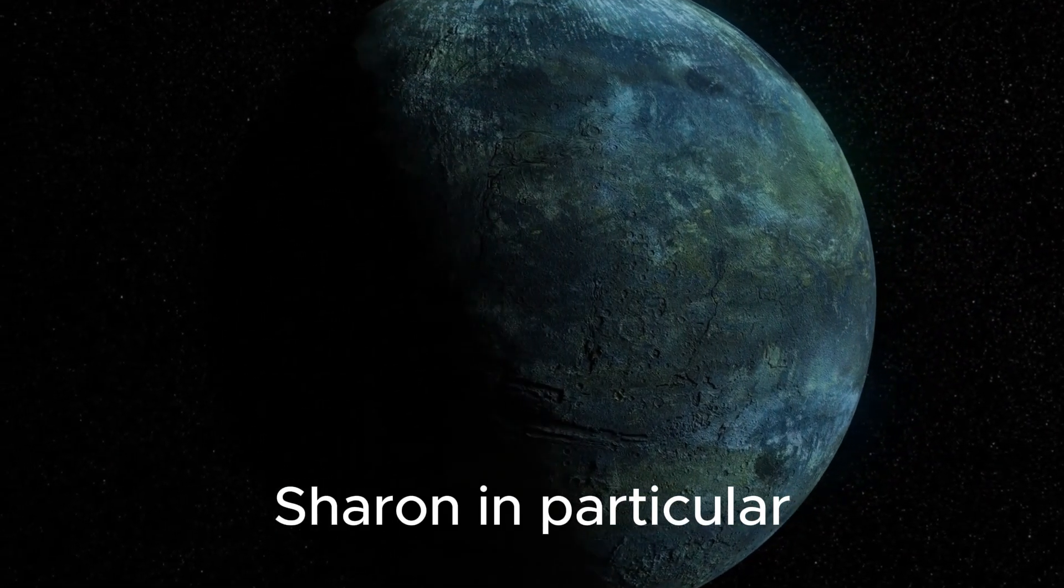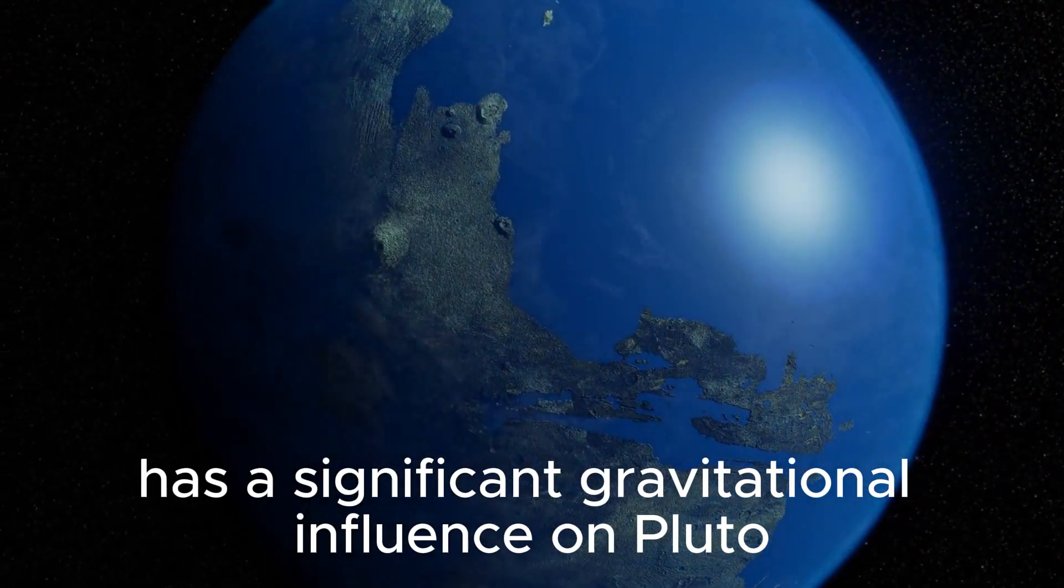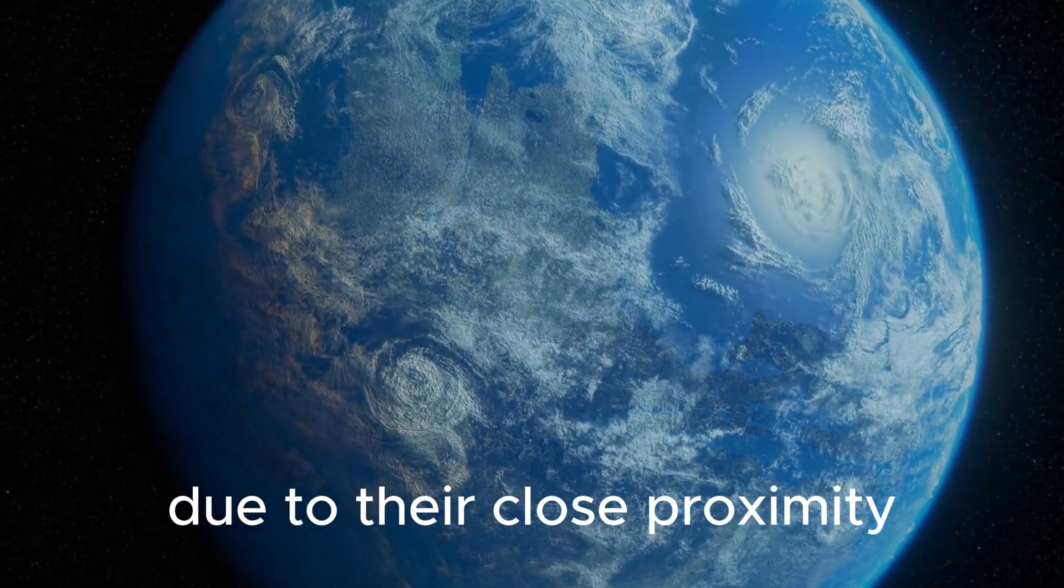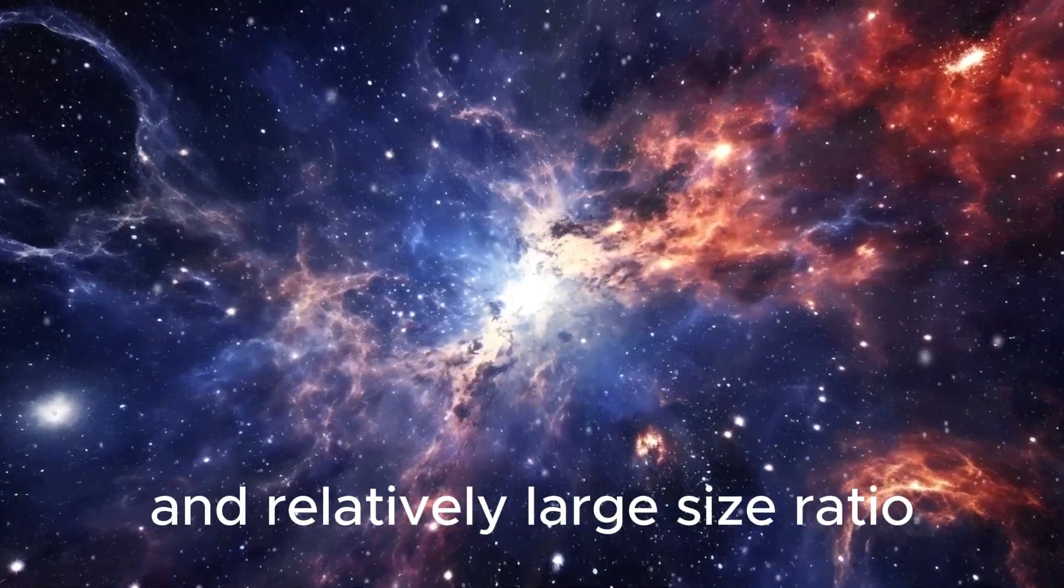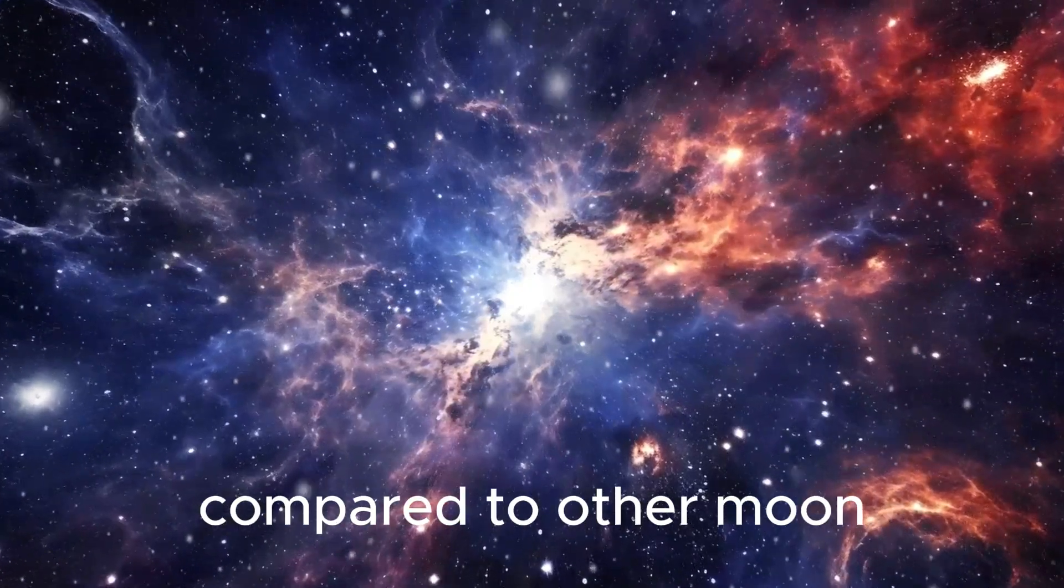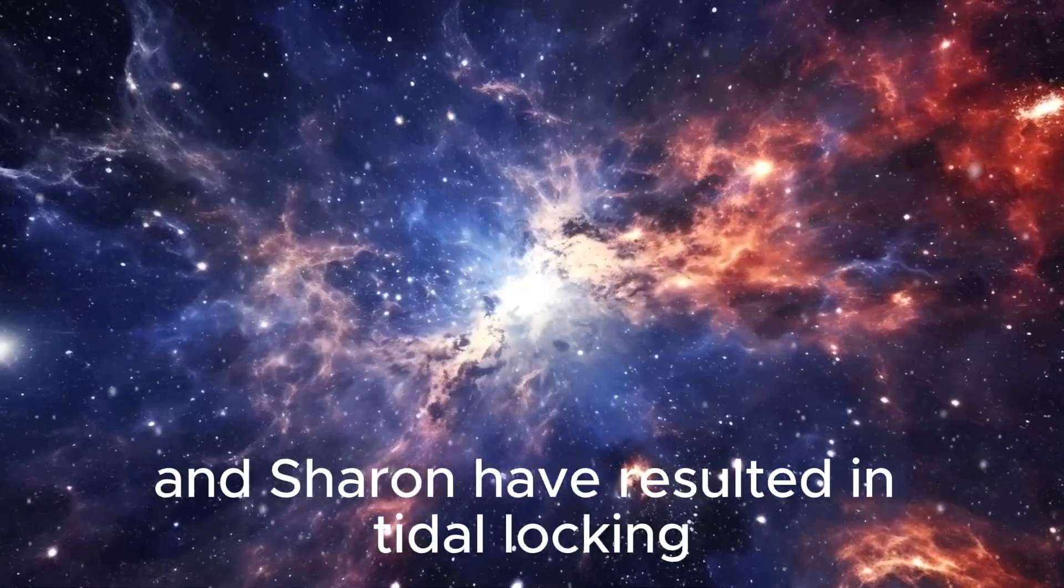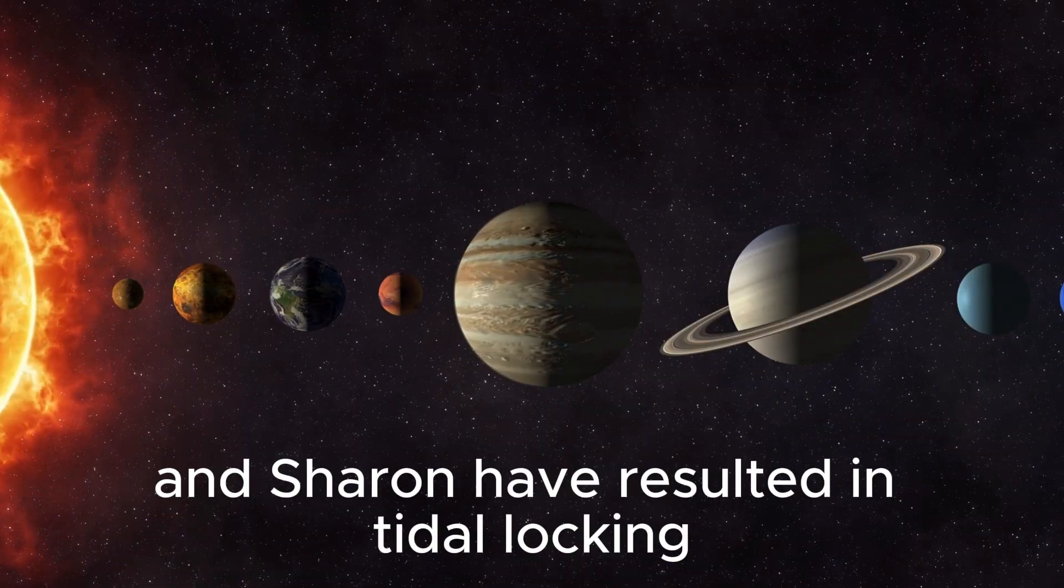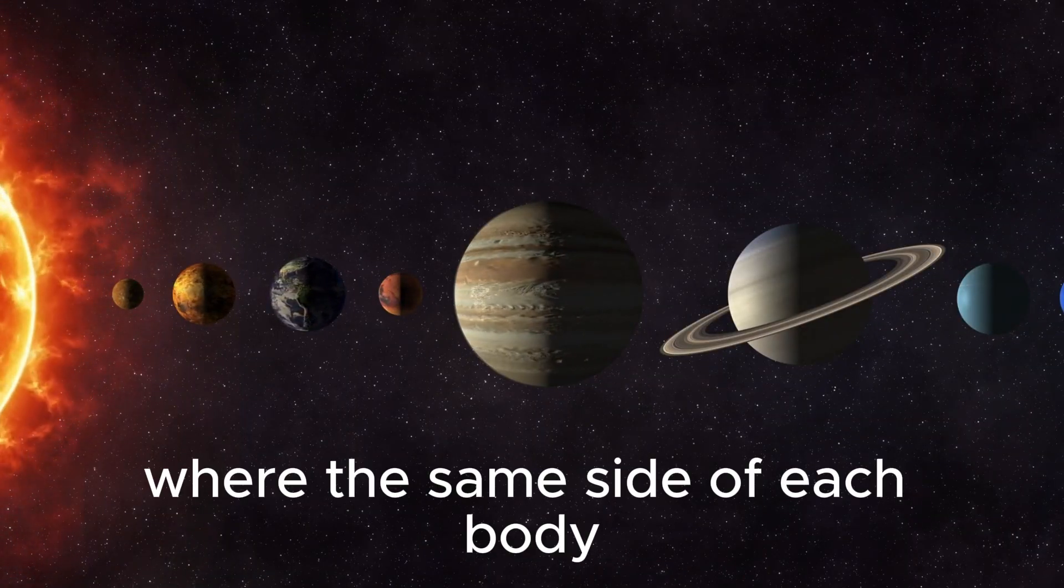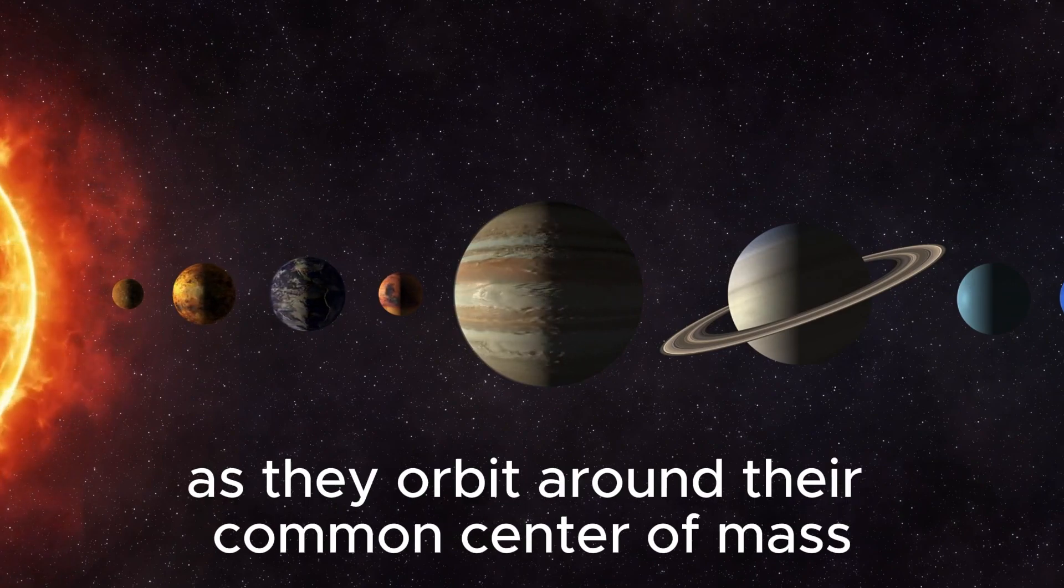Charon, in particular, has a significant gravitational influence on Pluto due to their close proximity and relatively large size ratio compared to other moon-planet systems in the solar system. The gravitational interactions between Pluto and Charon have resulted in tidal locking, where the same side of each body constantly faces the other as they orbit around their common center of mass.